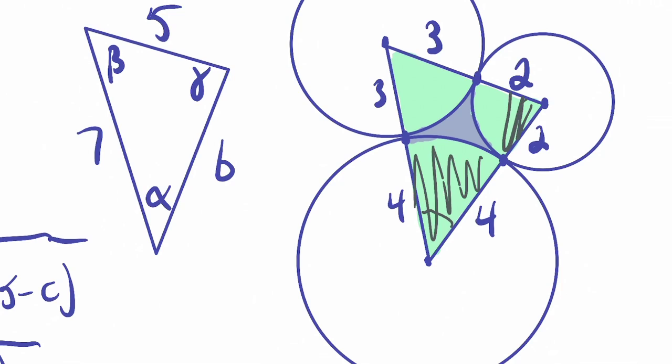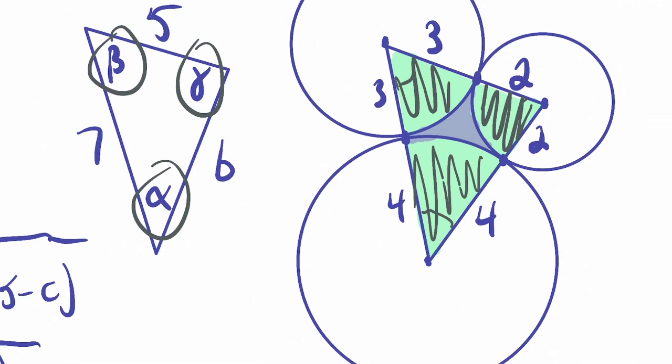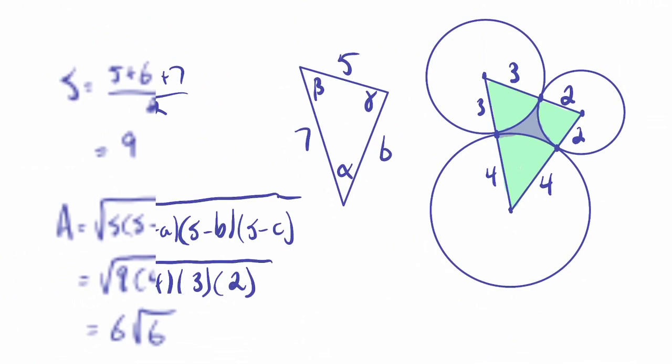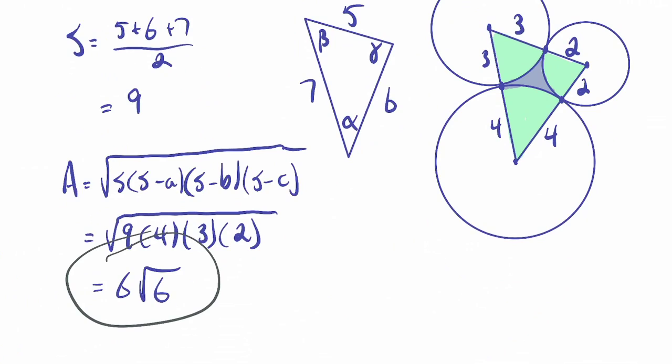Likewise, if we find this angle, we can find this area and subtract, find this angle, find this area and subtract. So basically, I need to find angles alpha, beta, and gamma. And that will allow me to find those areas using the area of a sector formula, and then we can subtract those areas from this area that we found to get the area of that space between the circles.